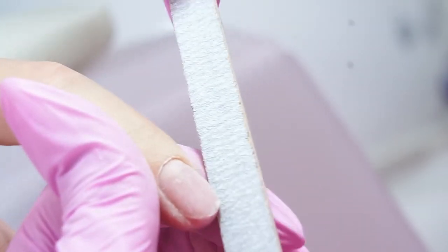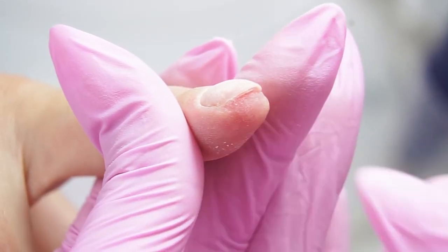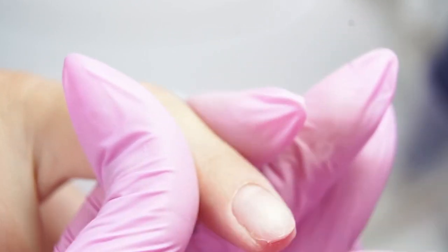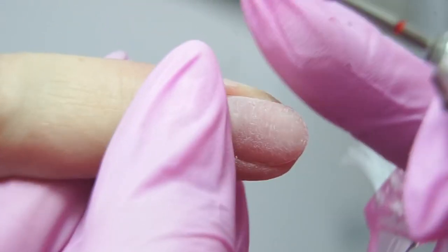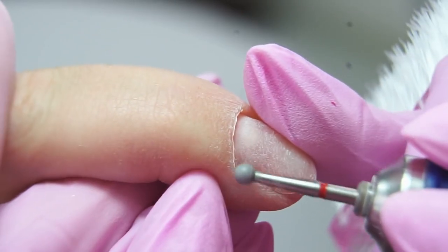I work very carefully on the index finger, so as not to damage the hyponychium. Hyponychium is the skin under the nail plate. I'm cutting the cuticle with a red sphere drill bit, 0.31 in diameter.